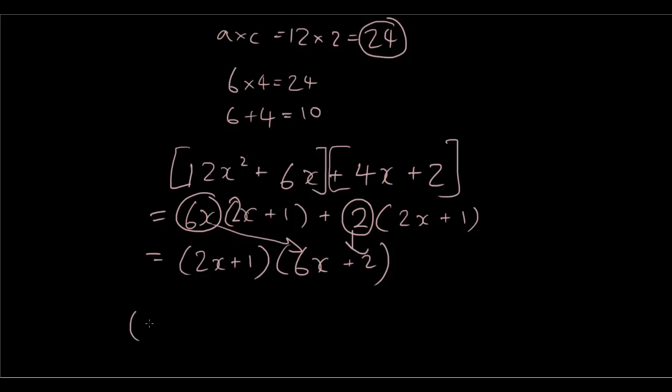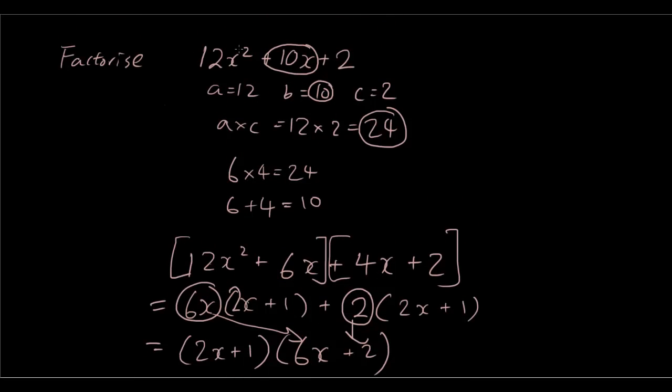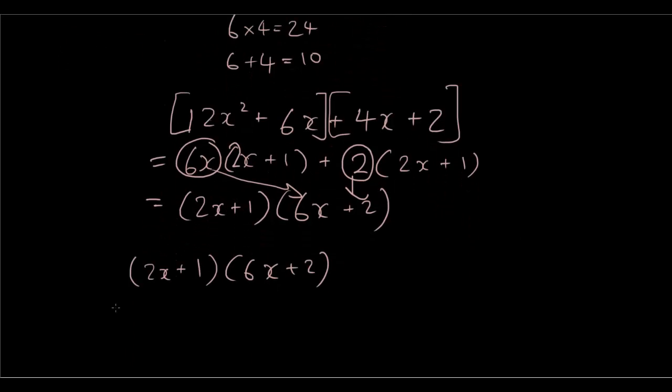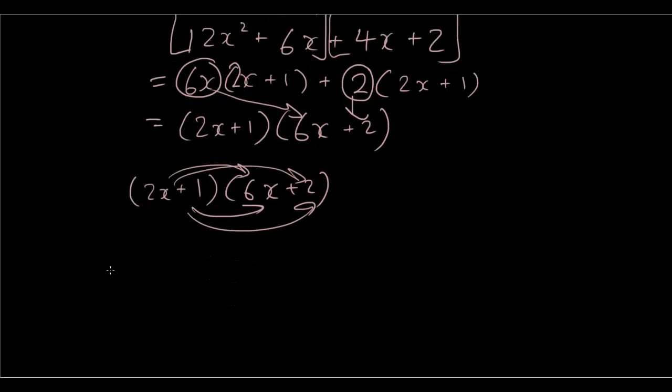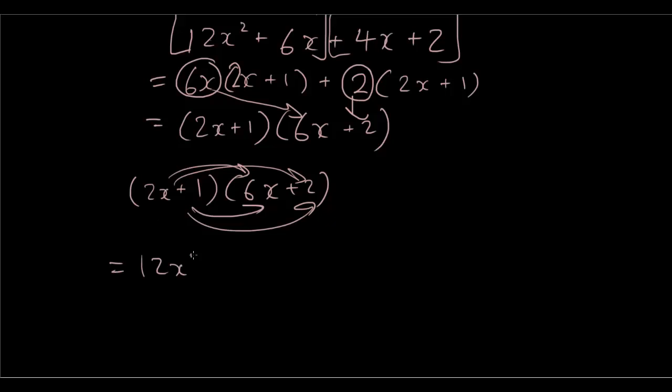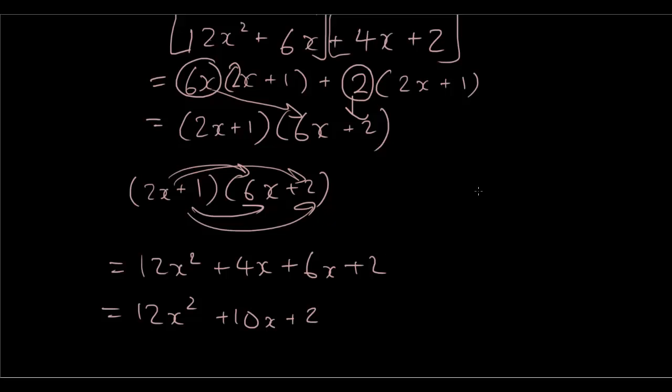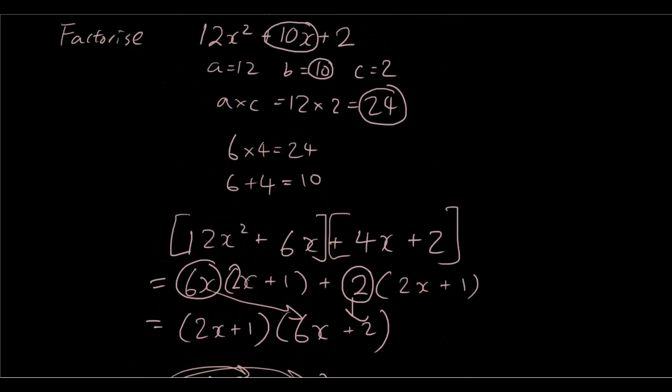Okay, now let's check whether this is definitely the answer. So 2x plus 1, 6x plus 2. Let's check that it expands into our original question, which is 12x squared plus 10x plus 2. So I multiply the terms out. 2x times 6x is 12x squared. 2x times 2 is 4x. 1 times 6x is 6x. 1 times 2 is 2. So that makes it 12x squared plus 10x plus 2. And that indeed is our question in the beginning.